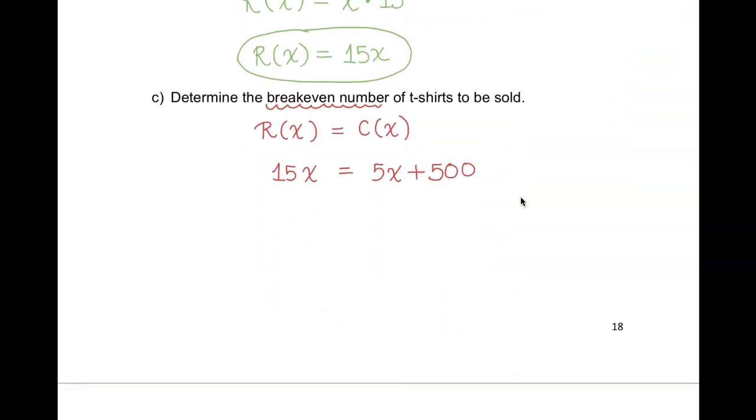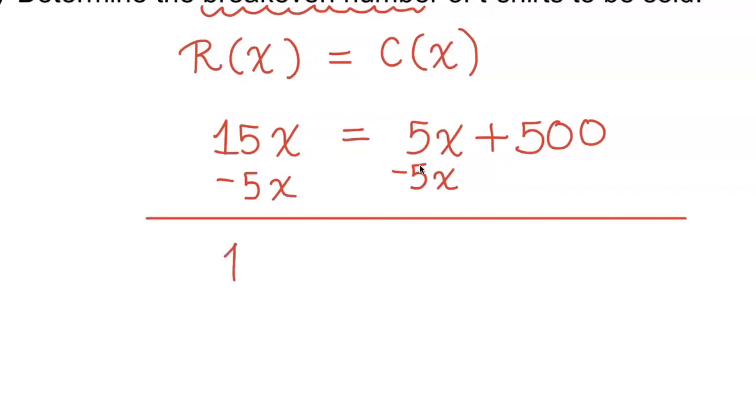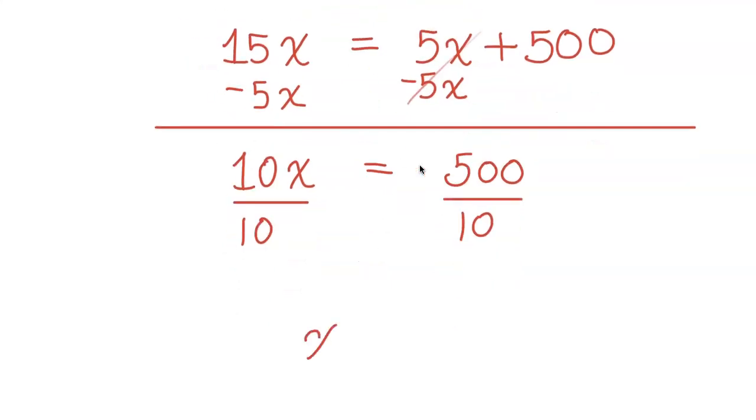Let's solve this linear equation. Subtract 5x from both sides, minus 5x, minus 5x. Then you're going to get 10x is equal to 500. Now divide both sides by 10. How many t-shirts do they have to sell to break even? x has to be equal to 50.